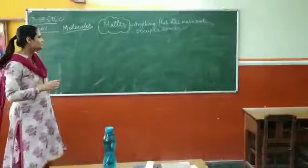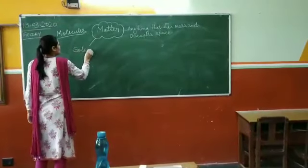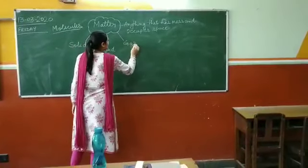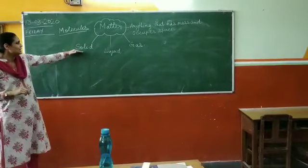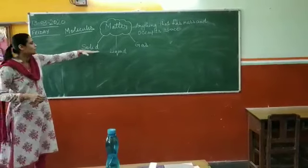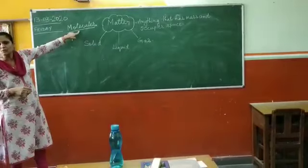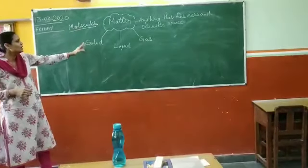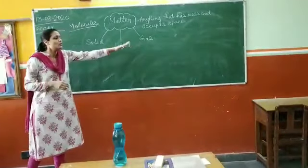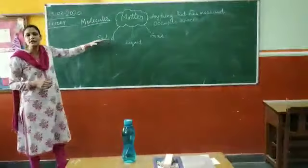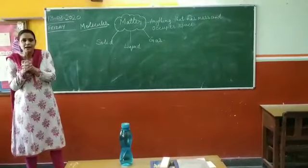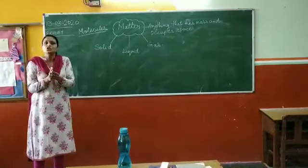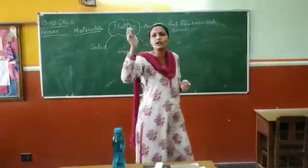Now, matter can be classified into three forms: solid, liquid, and gas. Why are we saying that matter is classified under these three broad categories? Because it is the arrangement of the molecules that will define which state the matter falls into. For example, the molecules in a solid are very closely packed — tightly packed — and because of this closeness, it gives rigidity and firmness to a solid. So you can't very easily change the shape of a solid unless you apply force.